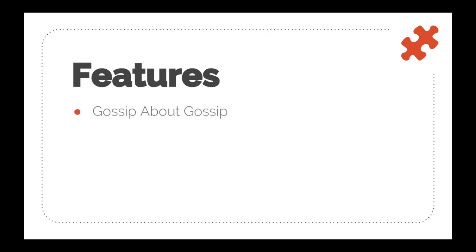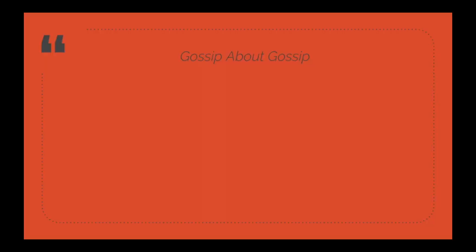Hashgraph uses two special features to achieve these three properties. The first one is 'gossip about gossip' and the second is 'virtual voting.' The gossip protocol is a well-known concept in the networking industry. To understand it, imagine how we spread gossips in real life.